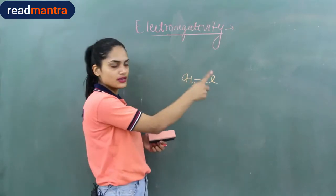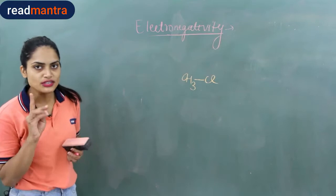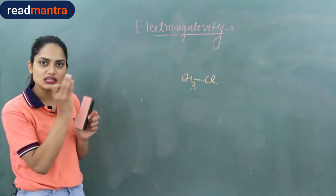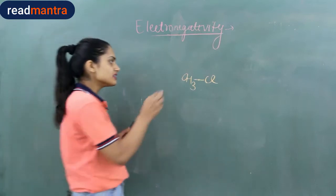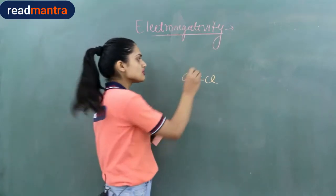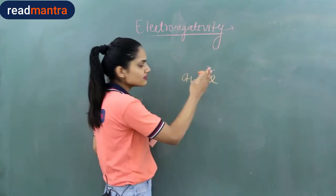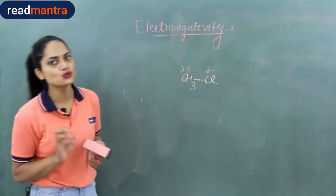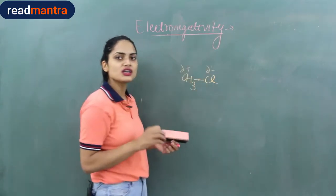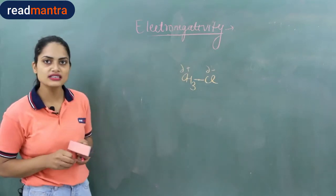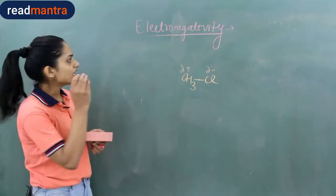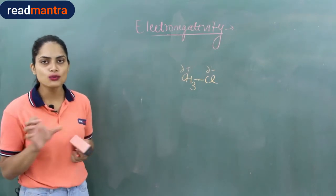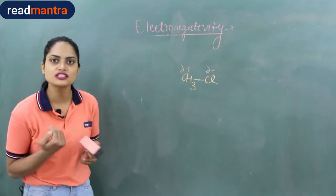Consider the bond between carbon and chlorine. There are two electrons in this bond. Ideally the electron density should be centered between them, but the electron density is more towards chlorine. So chlorine has a partial negative charge (δ−), and carbon has a partial positive charge (δ+). The charge magnitude is less than 1.6 × 10⁻¹⁹ coulombs because this is only an attraction, not a full charge transfer.